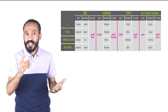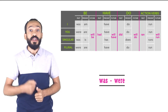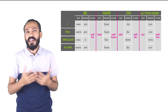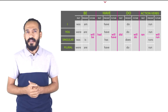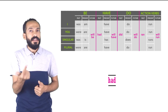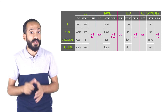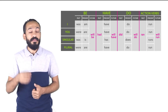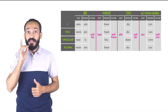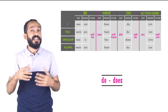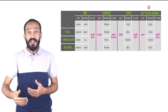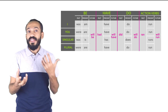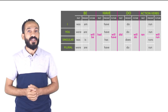Let's review. With verb to be in the past: was or were. In the present: am, is, or are. In the future: will be — only one form. Verb to have in the past: had. In the future: will have. But in the present we have two forms — have or has — so pay attention. Verb to do in the past and future has only one form each: did or will do. But in the present: do or does, depending on the subject. Same with action verbs — in the past and future only one form each, but in the present you use the verb with or without S depending on the subject.